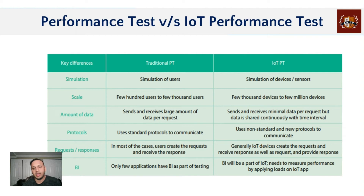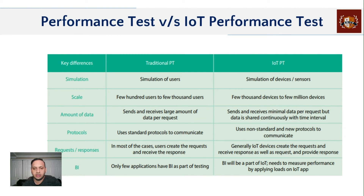For example, if you use your mobile phone to switch off a smart switch, that action is communicated to the device, and once done the device communicates back to your app confirming there is no power connection for that switch. Additionally, while not every traditional application needs business intelligence, in IoT, BI is part of it — it must measure performance at an optimal level by applying load on IoT apps.